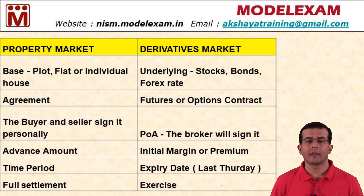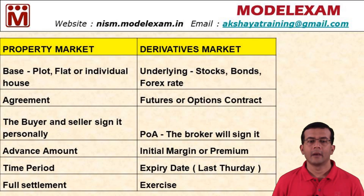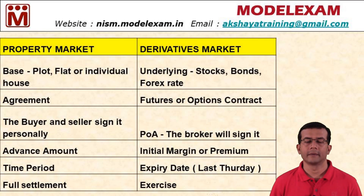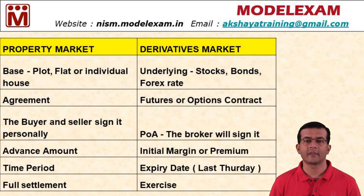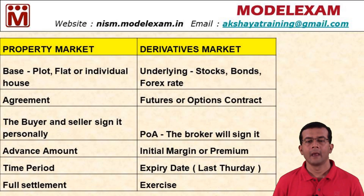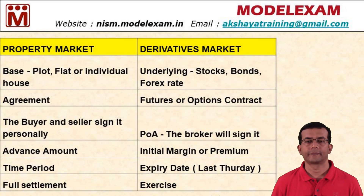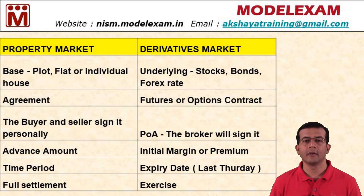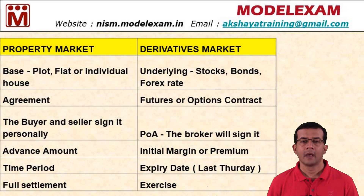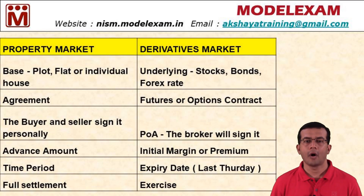The fourth point: whenever we purchase a plot or flat in the property market, we give an advance amount when entering the agreement and agree to pay the remaining amount after three or six months. In the derivatives market we do the same thing, but the technical term for that amount is called the initial margin or premium. Initial margin is applicable for futures, and premium is applicable for options.